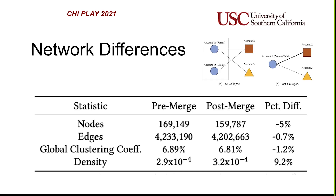First, we looked at the network differences that Sybils introduce. We used a merge approach where we merged Sybil accounts into a single meta-node, comparing the original network with this merged network where all Sybil accounts are collapsed into a single-account node. We found that the number of nodes and edges go down, and that the density of the network actually goes up significantly.